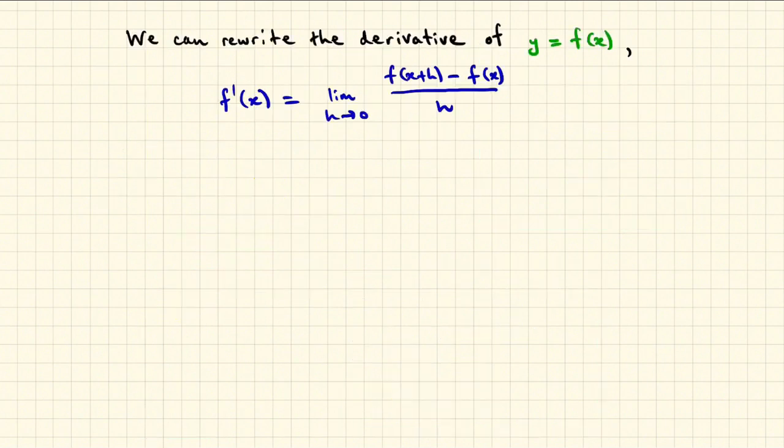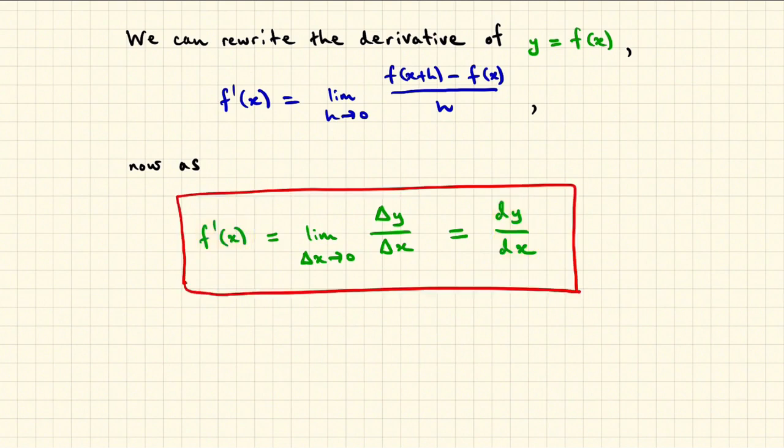We can now rewrite the limit definition of the derivative of y equals f of x, equivalently as the limit as delta x goes to 0 of delta y divided by delta x. And this has a very beautiful notational abbreviation, dy over dx, just spoken dy dx and called Leibniz notation in honour of Gottfried Leibniz.